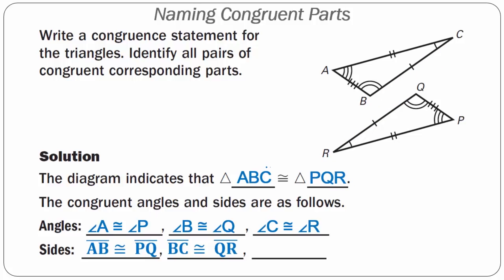For our last side, line segment CA is the third and first letters of triangle ABC. CA has two tick marks, which means it is congruent to RP — the third and first letters of triangle PQR — which also has two tick marks. So line segment CA is congruent to line segment RP.